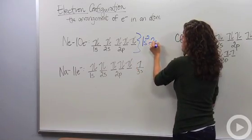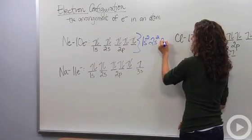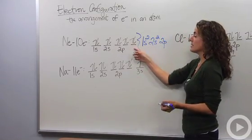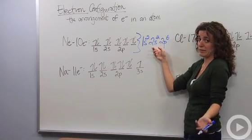In the 2s orbital I have two electrons, again superscript of 2. In the 2p orbital or sublevel, I have 6 electrons, so I'm going to make a superscript of 6. So this is basically electron configuration.